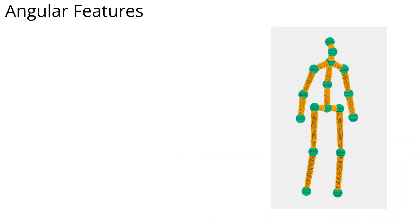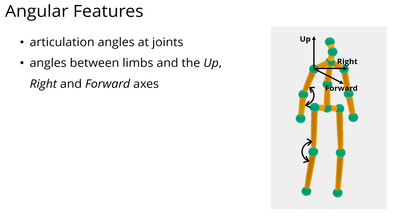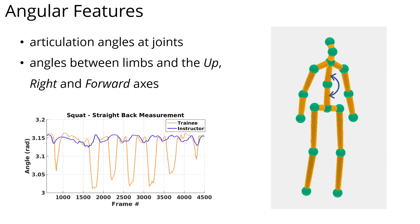AI-FIT looks at different angular features of the 3D skeletons, either articulation angles at joints, or angles between limbs and person-centered 3D axes. Here we show the angle representing the curvature of the back. In a squat exercise, this angle should be fixed and around pi, as in the case of the instructor shown in blue.